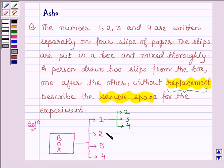And if they draw a slip with number 2, then the other slip - the possible outcomes - will have numbers 1, 3, or 4. Similarly,